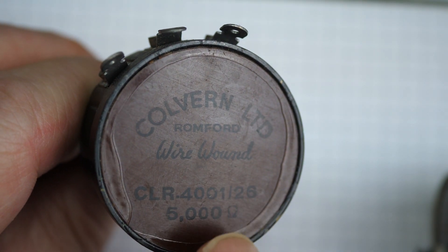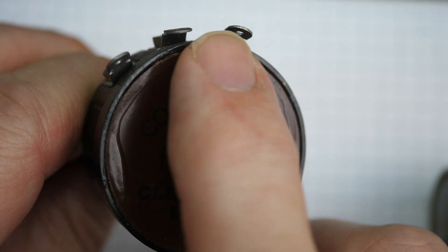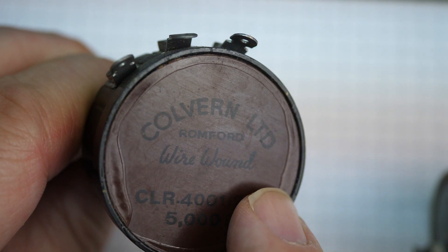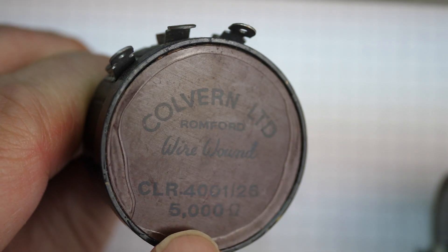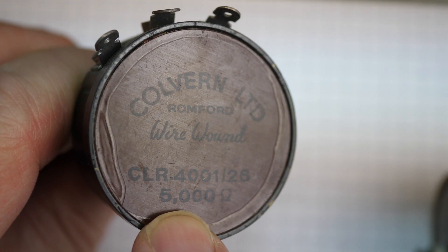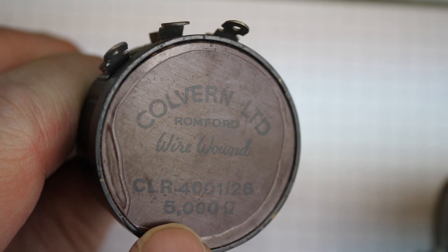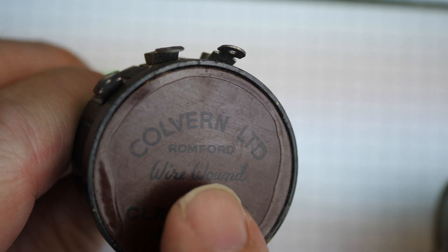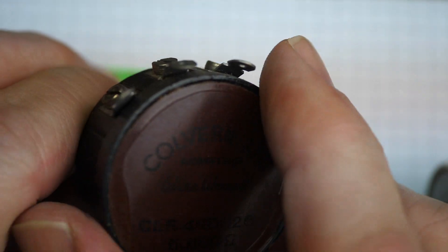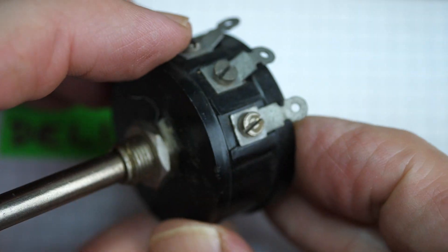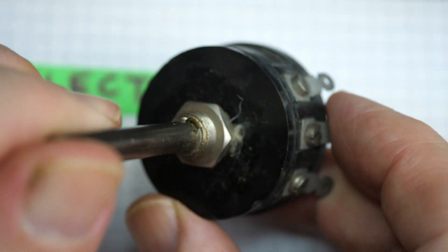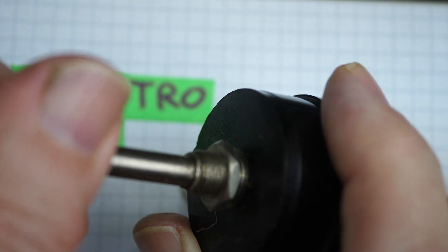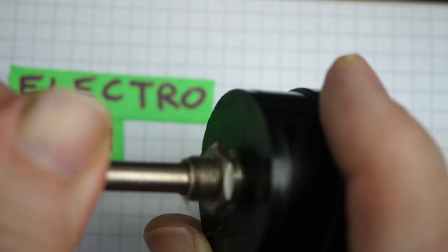and it actually says on the back here, wire-wound. This is one of the good ones. The rear is sealed, so there's a little plastic or bakelite cover on the back, and this one says it's 5,000 ohms. Not 4.7K, but 5,000 ohms. There's a model number there. Colvern Limited Romford, so made in England. Looking a little bit grubby, it's obviously been stashed away for some time.